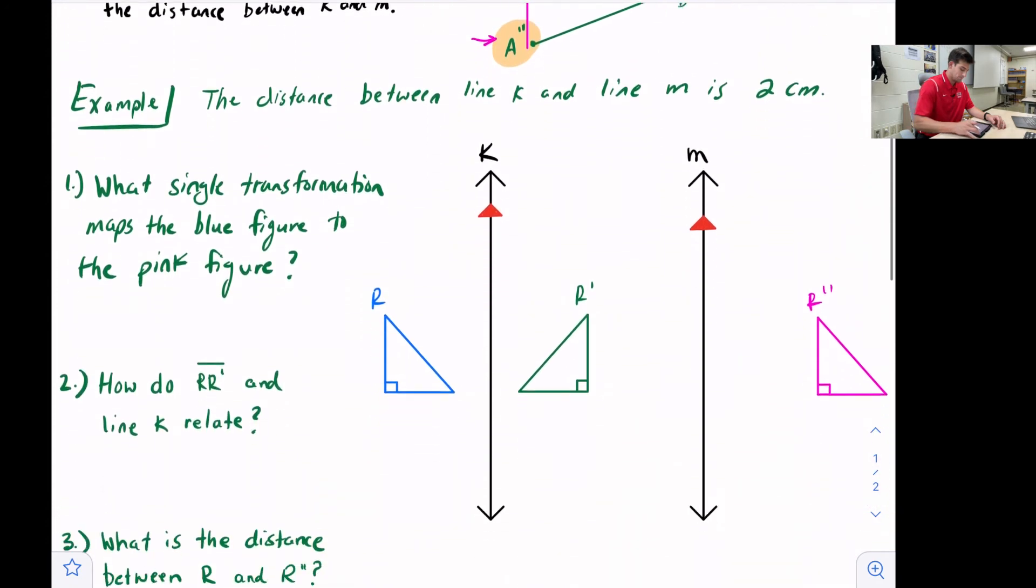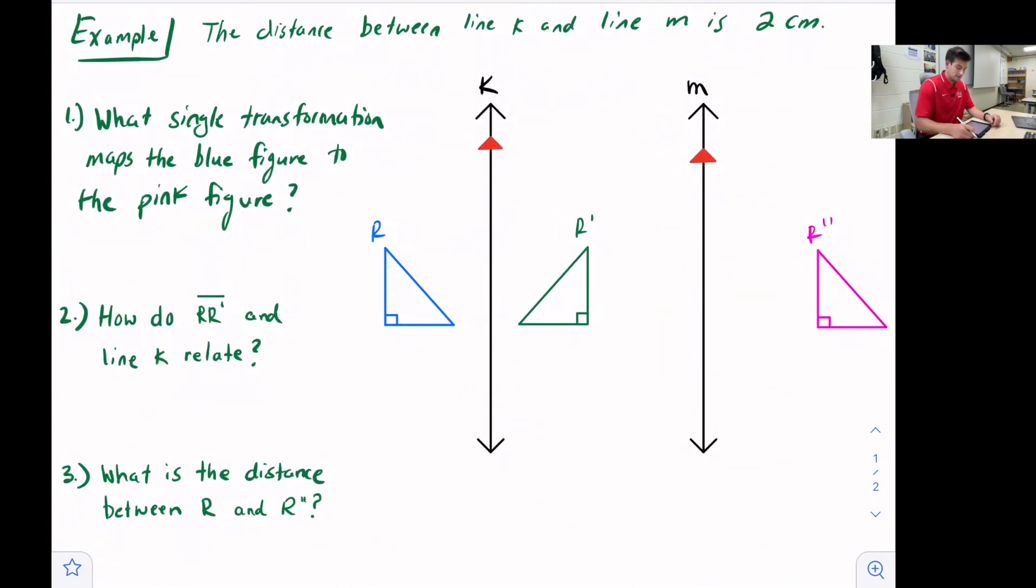So let's look at an example. It says the distance between line k and line m is two centimeters. So that's important to note. This distance right here is two centimeters.